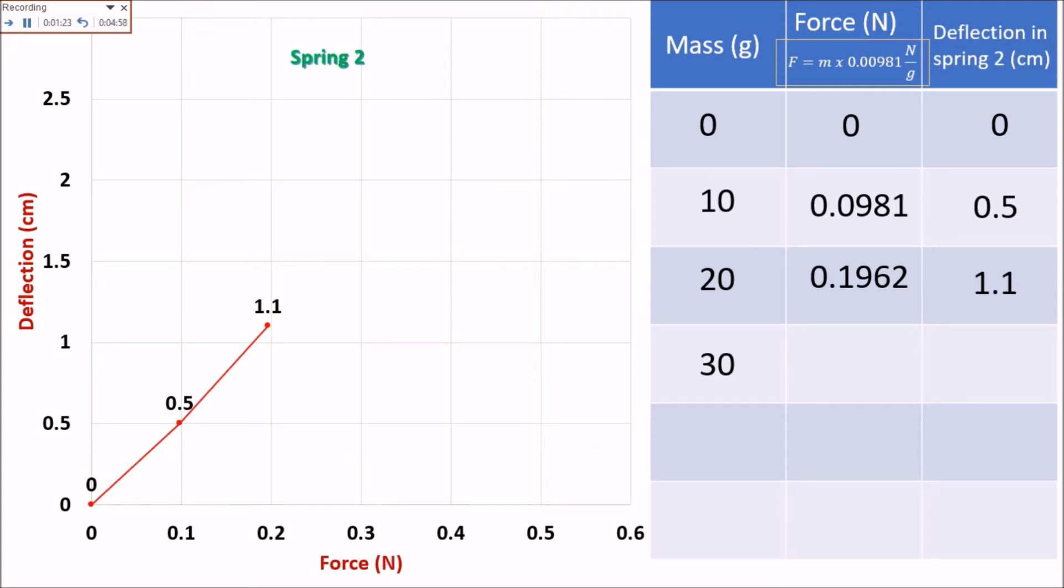For mass number 3, that is 30 grams, we have a force of 0.2943 newton, and the deflection is 1.6 centimeters.